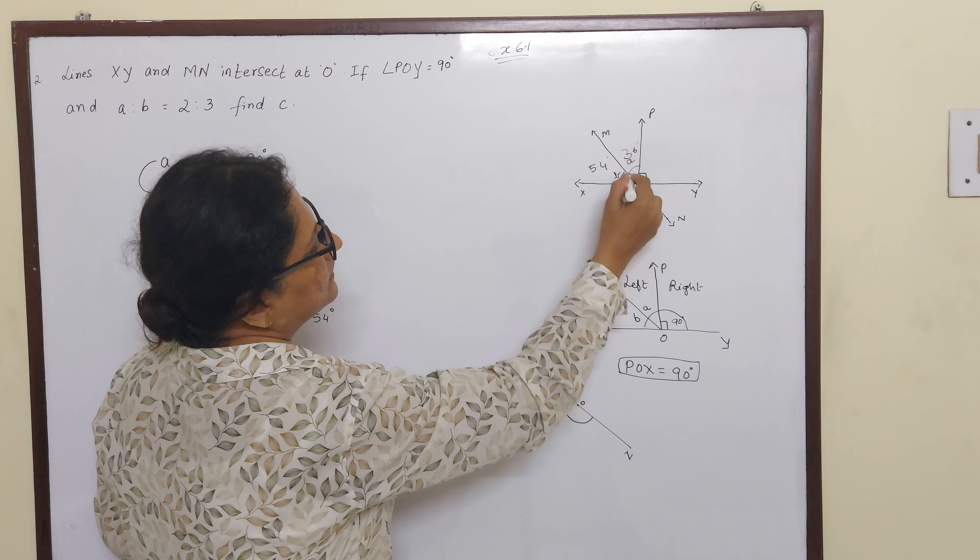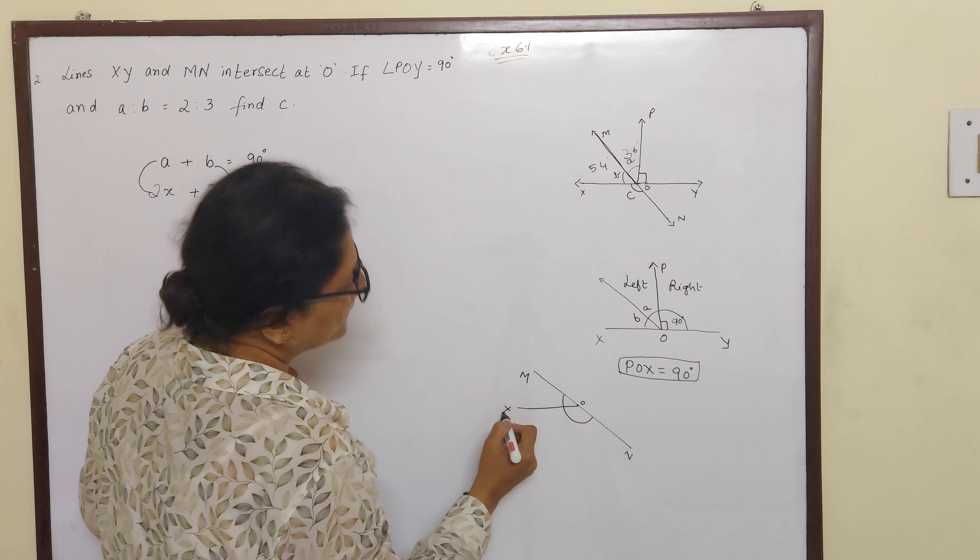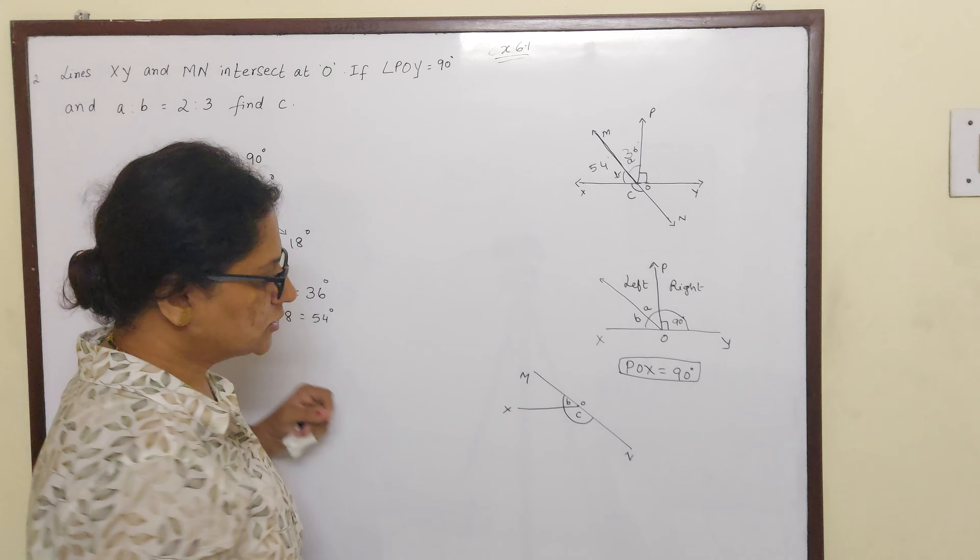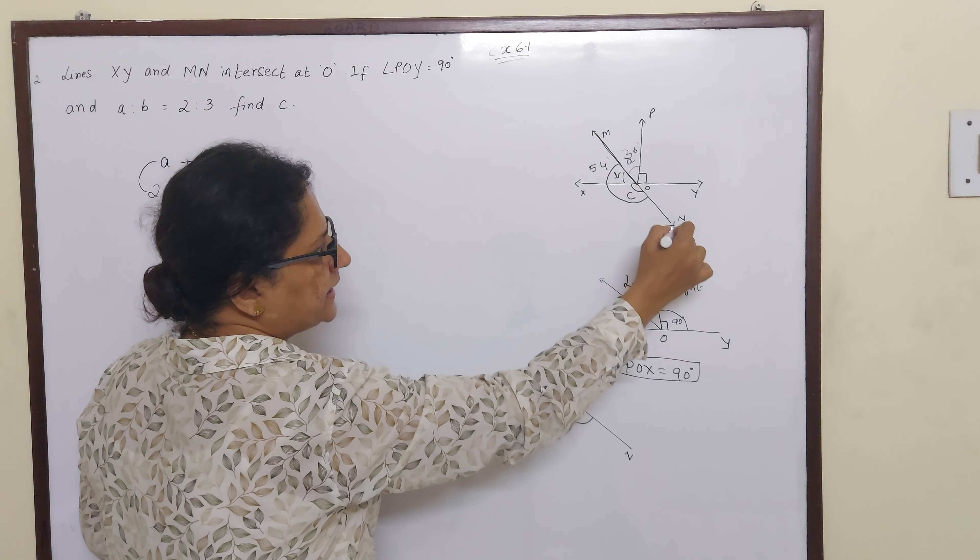And what is this angle here? This is M, right? And this is X. So this is your B and this is your C. So B plus C also will give you 180 degrees.